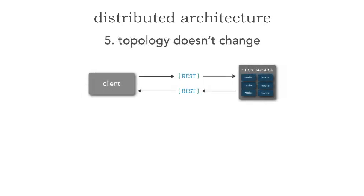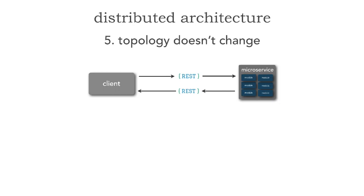Fallacy number five of distributed computing is the assumption we make that the network topology doesn't change. Of course it changes — as a matter of fact, it can change as frequently as our applications. Assumptions we make about the current switches, routers, load balancers, and network we have: if those change, it may impact some of our performance, scalability, and availability. So we can't make the assumption that the topology itself is frozen in time.